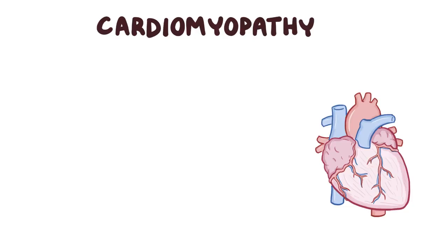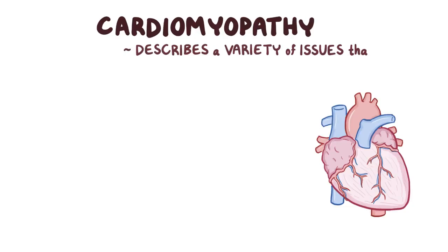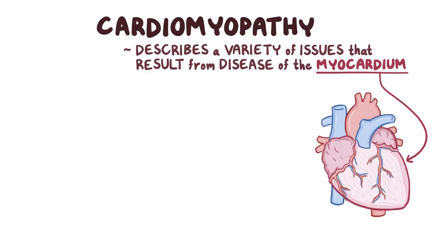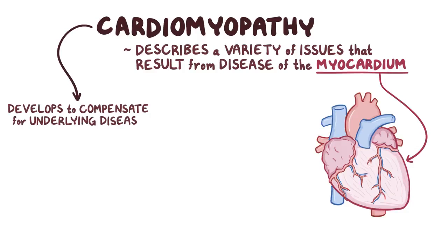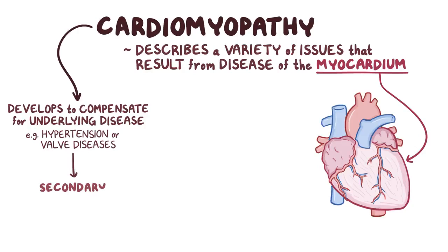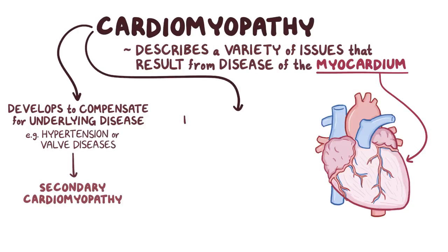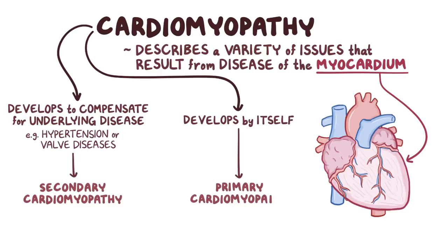Cardiomyopathy is a broad term used to describe a variety of issues that result from disease of the myocardium. When cardiomyopathy develops as a way to compensate for some other underlying disease, like hypertension or valve diseases, it's called secondary cardiomyopathy. But when it develops all by itself, it's called primary cardiomyopathy.